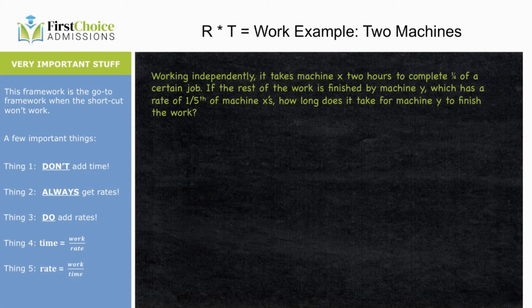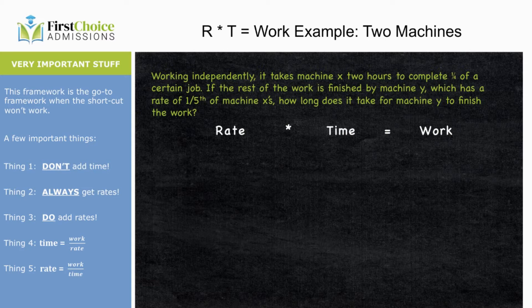Working independently, it takes machine X two hours to complete one quarter of a certain job. If the rest of the work is finished by machine Y, which has a rate of one-fifth of machine X's, how long does it take for machine Y to finish the work? That seems sufficiently confusing, but remember: regardless of how confusing the question is, we know one thing for certain — rate times time equals work.